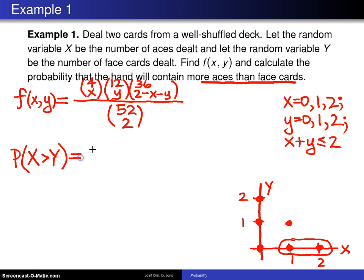Where in this picture is it true that we have more aces than face cards? These two values right here. So this probability will be f(1,0), right? That is this point, which is one ace and no face cards, plus f(2,0). And this quantity right here is associated with two aces and no face cards. All we have to do at this point is to get f(1,0), plug right into this expression here. We'll have four choose one, 12 choose zero, 36 choose one divided by 52 choose two, and the same type of thing for f(2,0).